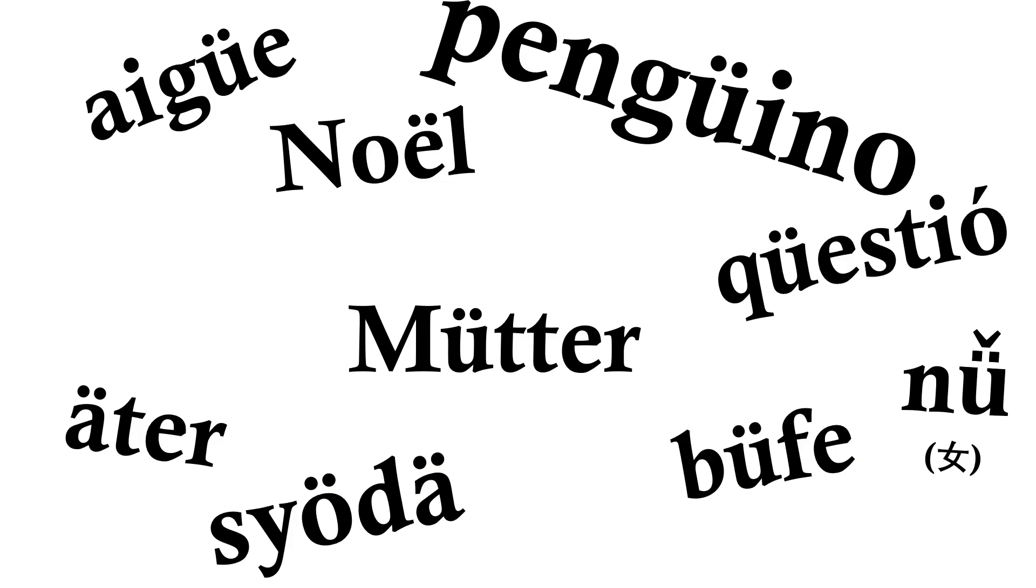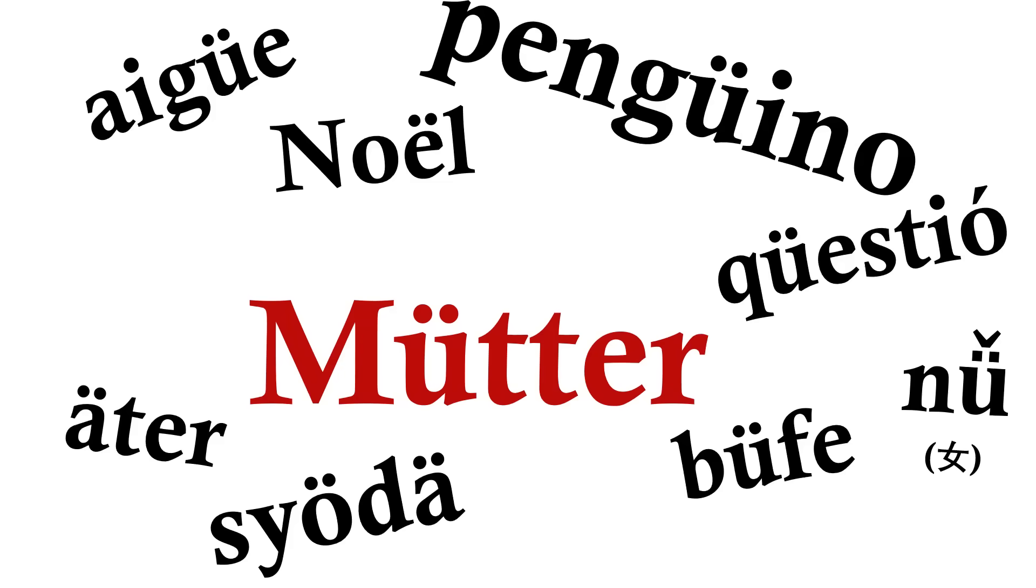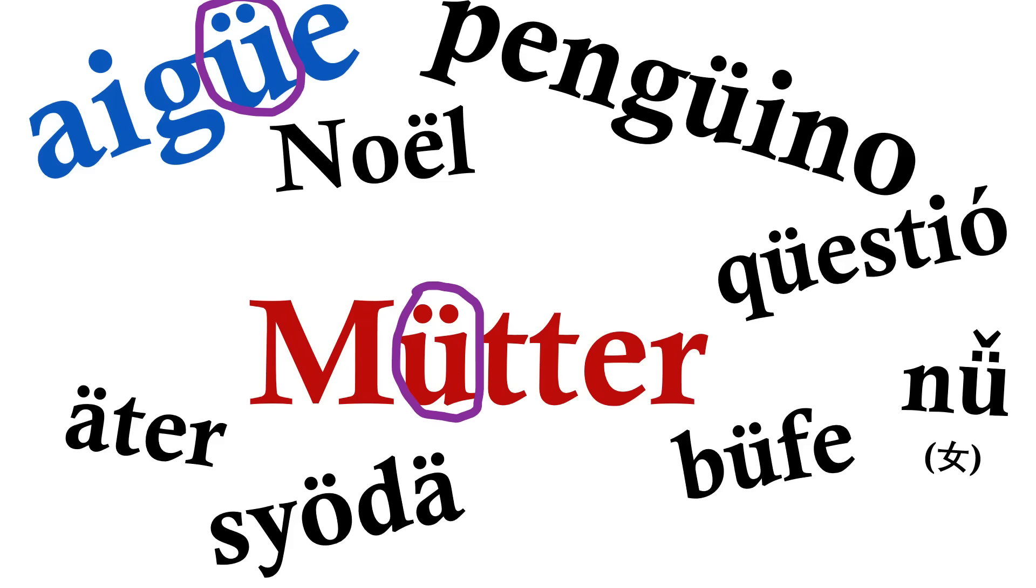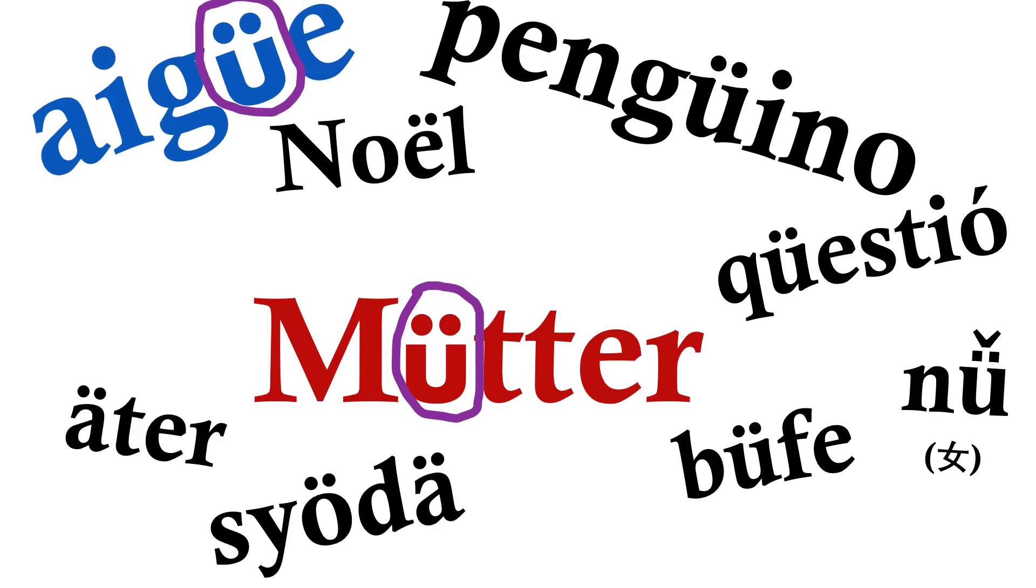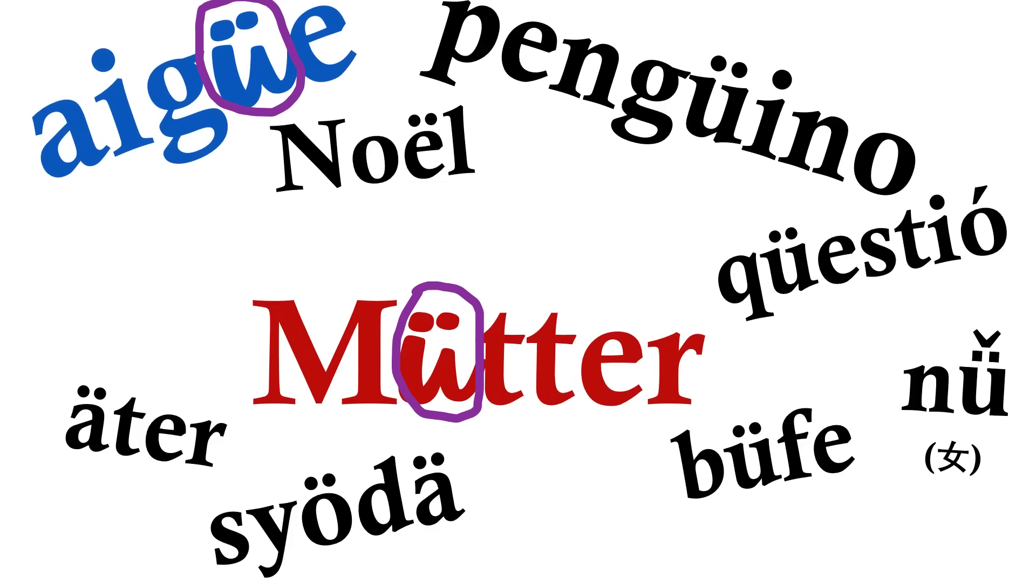Now, if you take, for example, this letter U with two dots as seen in the German Mütter, or the French Aigüe, you'll see that these are identical. They have the same Unicode code, they are written identically in any given handwriting style.